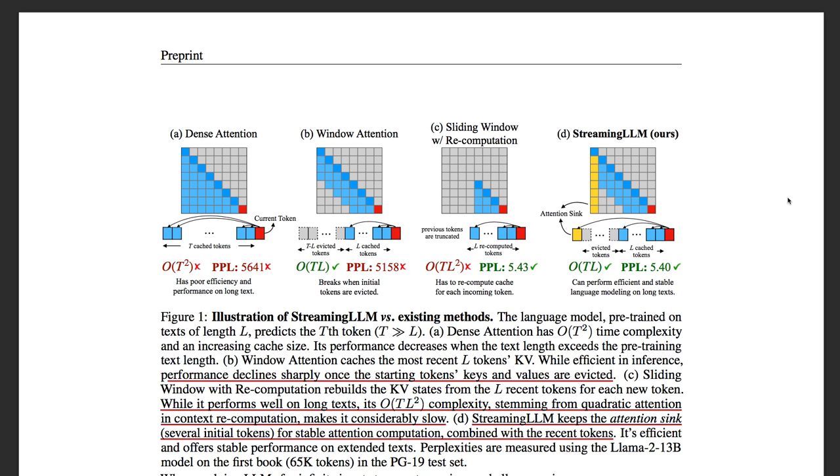the initial tokens while doing the sliding window. And by doing that it's able to perform just as well as the sliding window with recomputation model but with much, much better computation complexity, which means you can use this in production which means it will not be extremely slow when you talk to it.